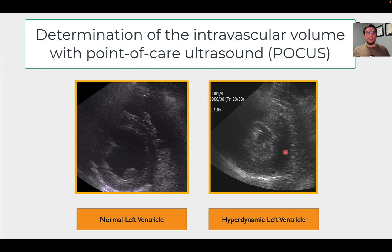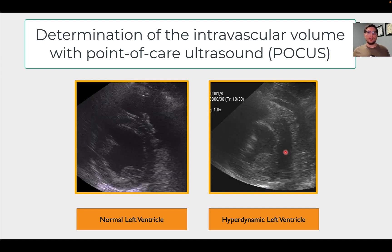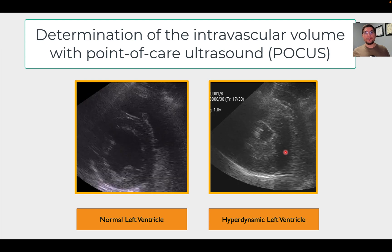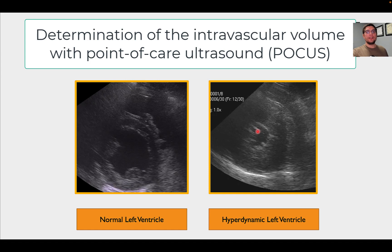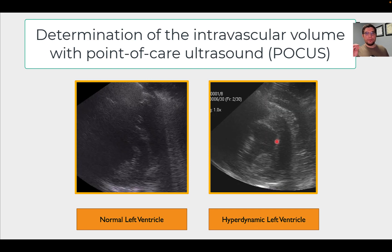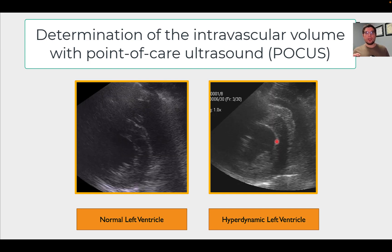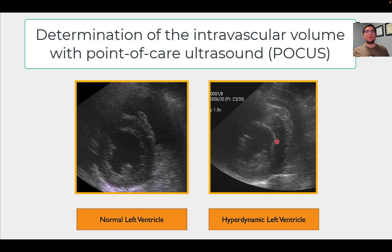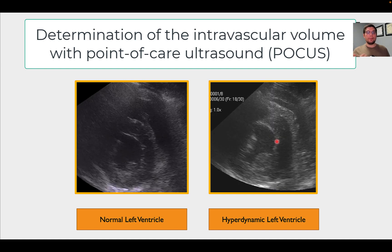Now if you're looking at a different patient that has severe hypovolemia — this patient bled out and lost a lot of intravascular volume — the patient is trying to compensate. You can appreciate the increased heart rate, but also the end-systolic volume and end-diastolic volume are much smaller than in a healthy patient. The volume is diminished and the left ventricle is shrunk with less volume within it at end-diastole and systole.